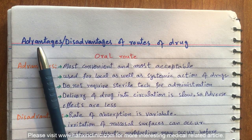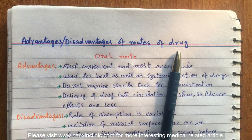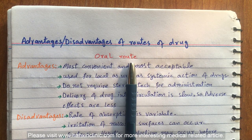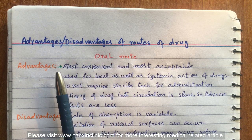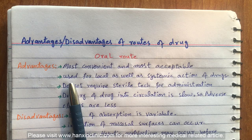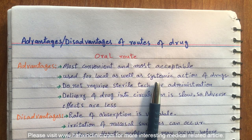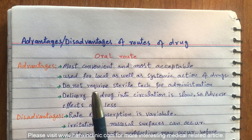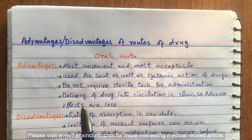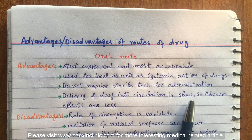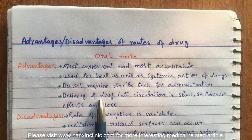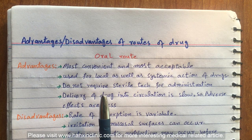Our topic is advantages and disadvantages of routes of drug. The first route is the oral route. Advantages of oral route: it is the most convenient and most acceptable route; it is used for local as well as systemic action of drugs; it does not require sterile techniques for administration; and delivery of drug into circulation is slow, so adverse effects are less.